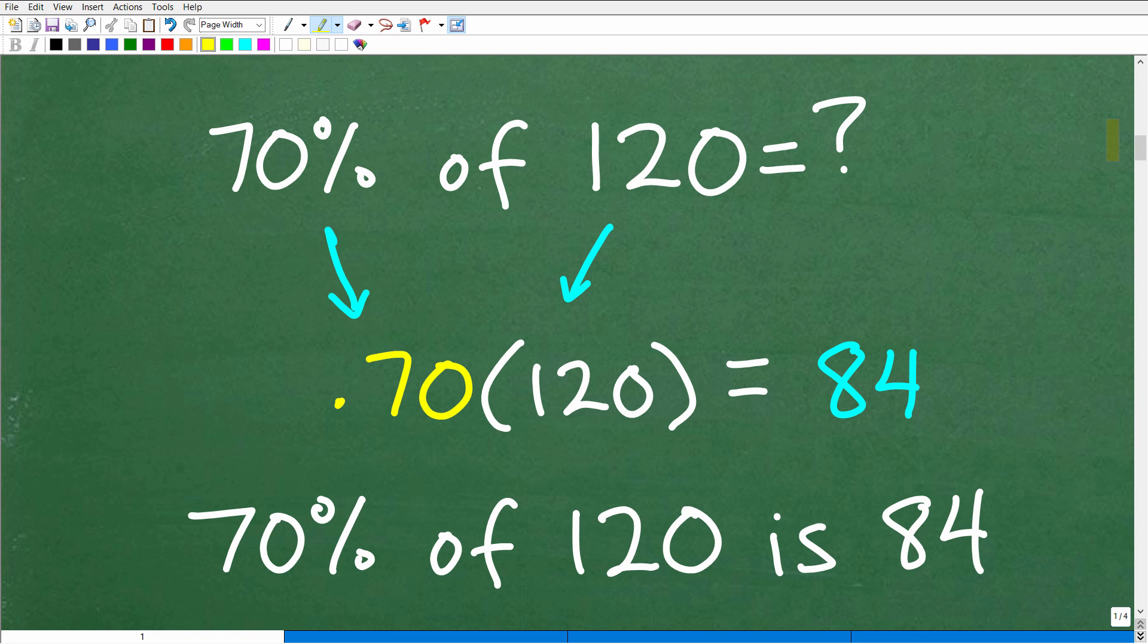So here is a nice, lovely basic percent problem, kind of a standard, probably the most common type of percentage situation that most of us encounter, and that's just simply finding the percent of a number. So let's suppose I wanted to find 70% of 120. So how do we do a problem like this? Well, when you want to find a percent of a number, of some particular value, what we need to do is to change the percent into a decimal.